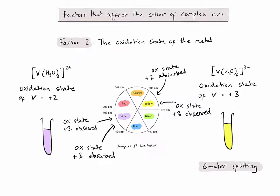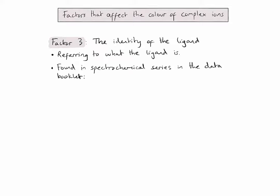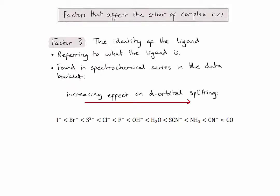Let's now consider the third and final factor: the identity of the ligand, which refers to what the ligand actually is. You don't need to memorise all of the ligands as you can find them in the spectrochemical series in the data booklet. The spectrochemical series is ordered in the increasing effect on d-orbital splitting, so as we move from left to right across the spectrochemical series, we expect to see larger and larger energy gaps between the split d-sub-level.